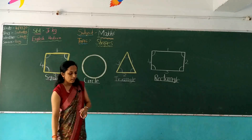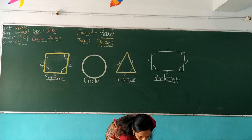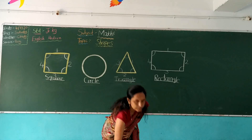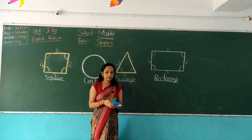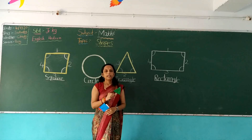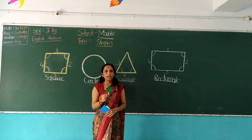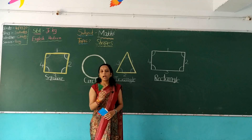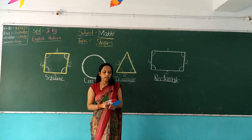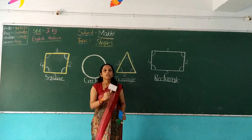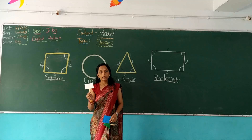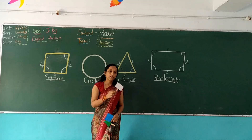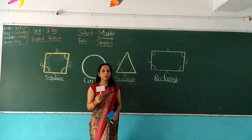So children, sing with me. Triangle shape, triangle shape, where are you? Here I am, here I am, how do you do? Rectangle shape, rectangle shape, where are you? Here I am, here I am, how do you do?